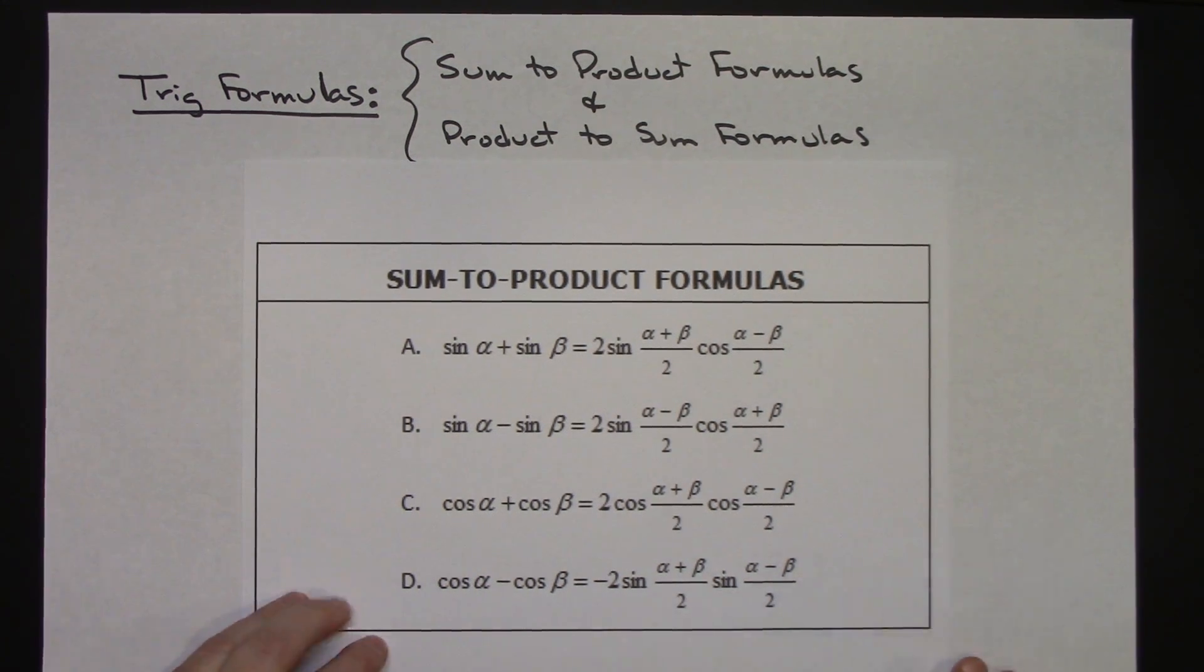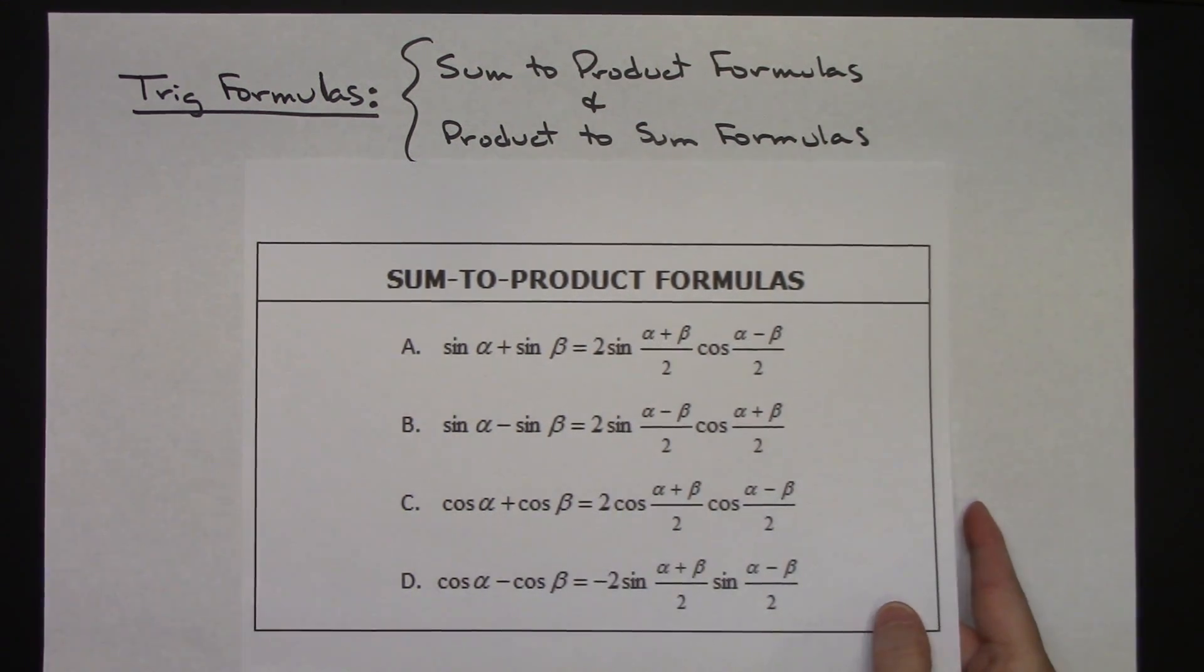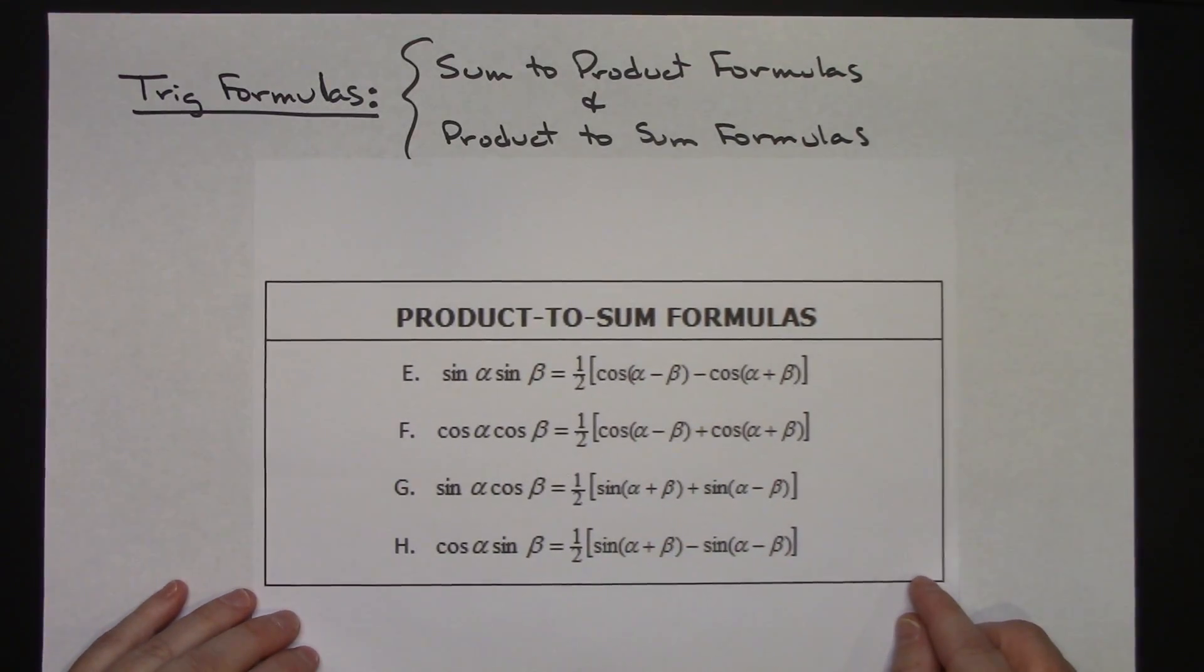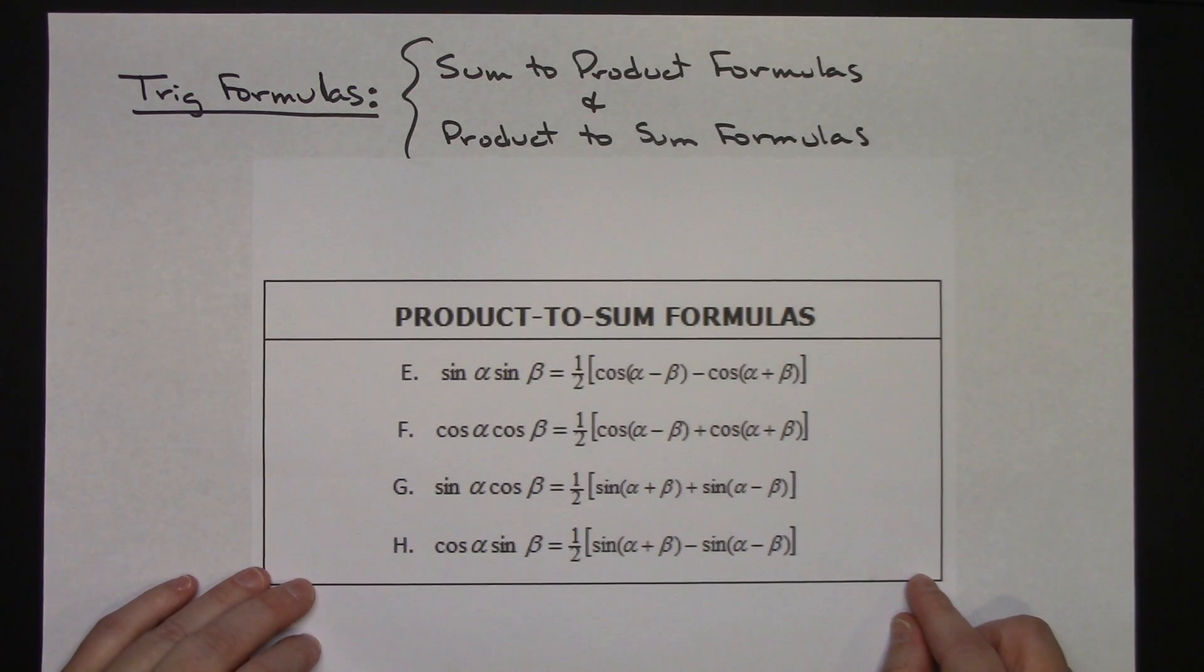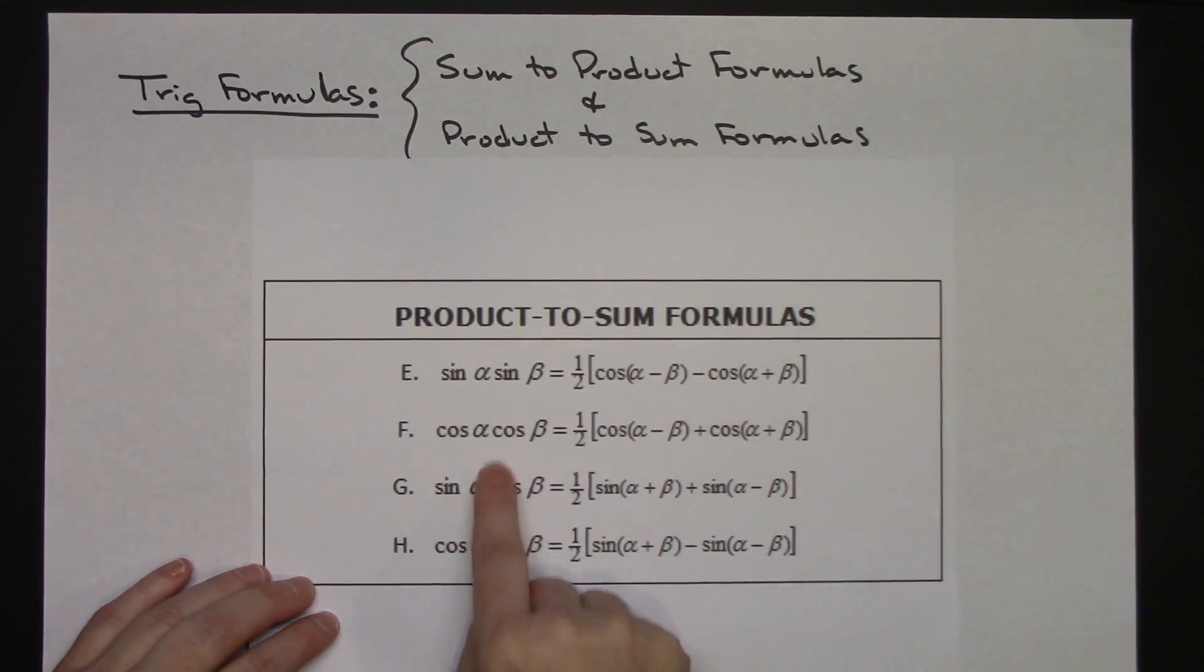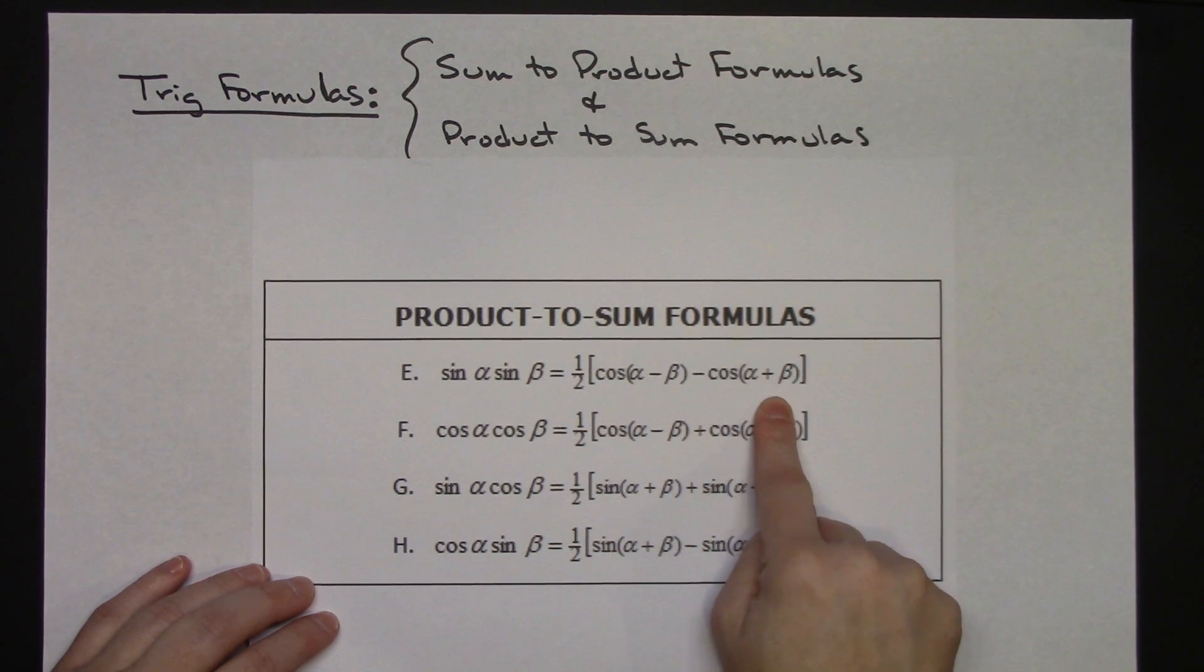And then we're going to take a look at the product to sum formulas. There are another four of these. Product to sum means I have a product to start with and I've got a combination of sine and cosines, and I'm turning it into a sum and these are the formulas that we're going to use.